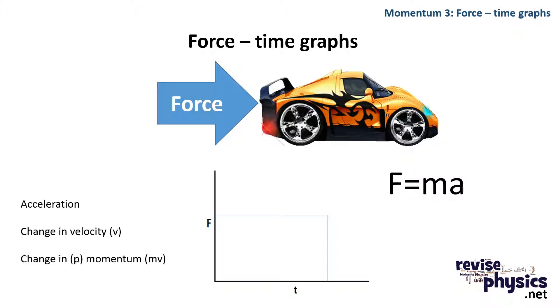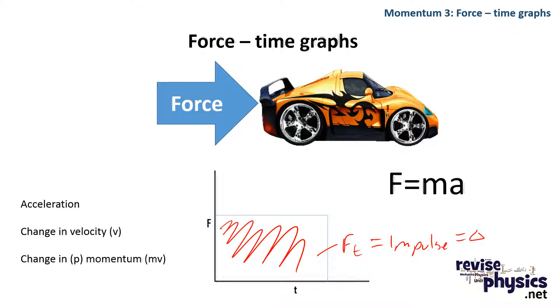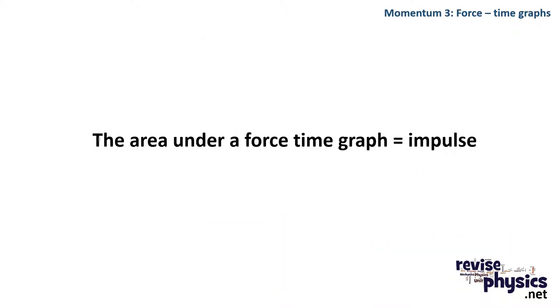Now, the area underneath this graph is giving us force times time. But we know that that is the same as the impulse, which is the same as the change in momentum. So, the area under a force-time graph gives us the impulse, or the change in momentum, of that object.